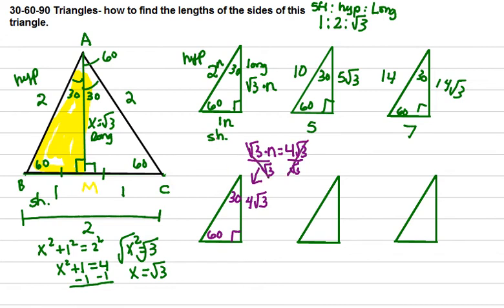So n, or one n, is the short leg, which is four. Therefore, the hypotenuse, since the short leg is one n, the hypotenuse is two n, the hypotenuse has to be eight.